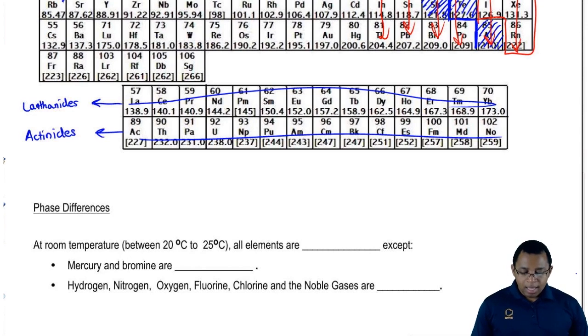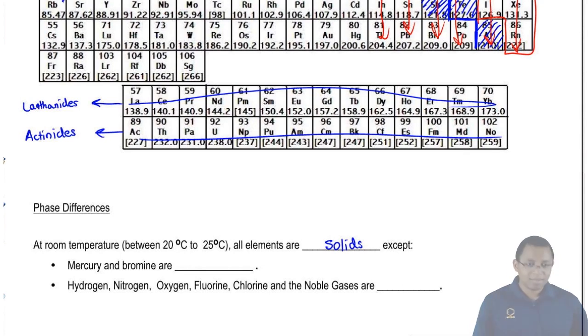We're going to say at room temperature, almost all the elements you find on the periodic table will be solids. Just so you can see everything I'm writing, I'm going to take myself out the picture. Just remember, at room temperature, all elements are solids except for a few.